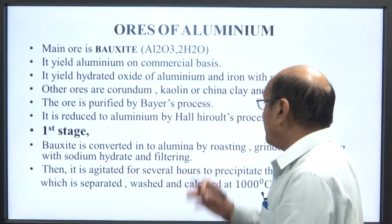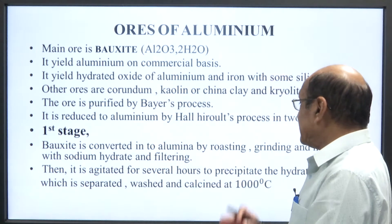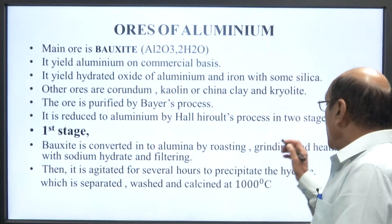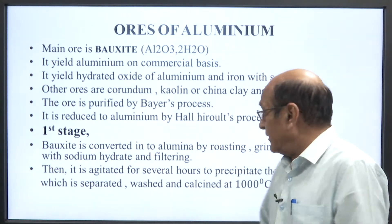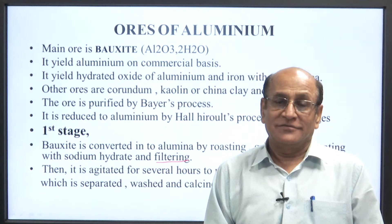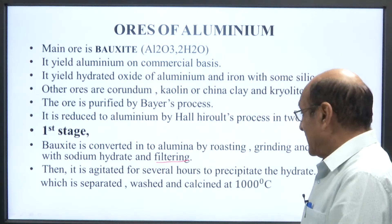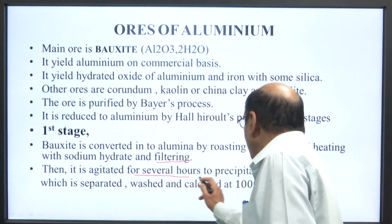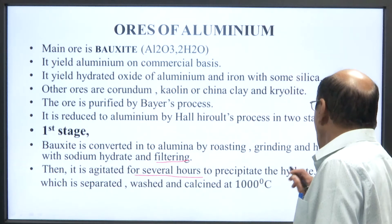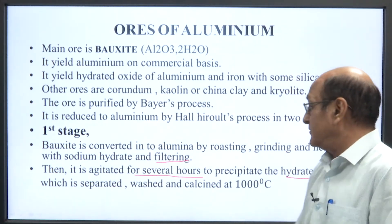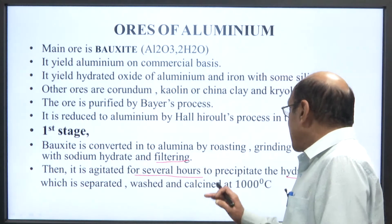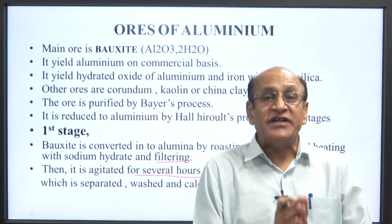Coming to the first stage: bauxite is converted into alumina by roasting, grinding, heating with sodium hydrate, and filtering. Then it is agitated for several hours to precipitate the hydrates, which are separated, washed, and calcined at 1000 degrees centigrade.